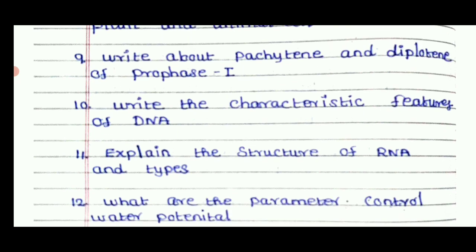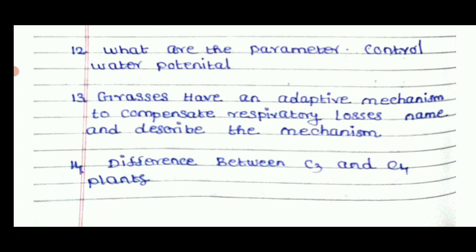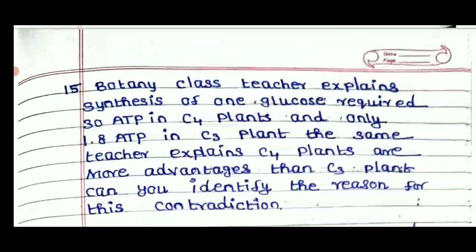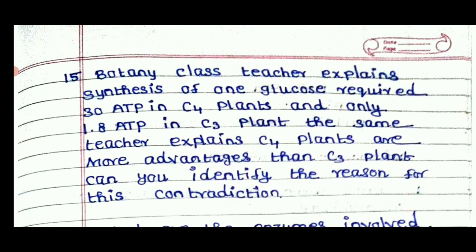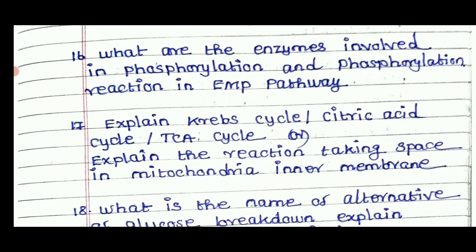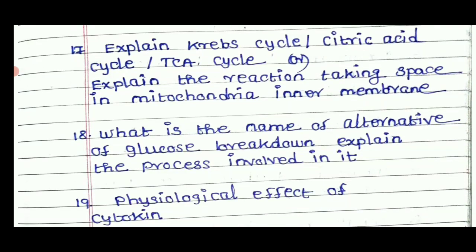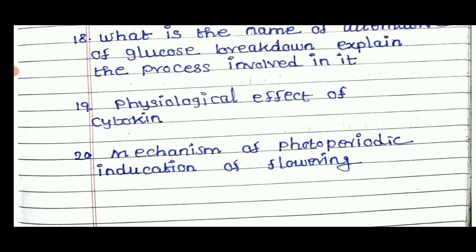Write the characteristic features of DNA. Explain the structure of RNA and its types. What are the parameters that control water potential? Grasses have an adaptive mechanism to overcome respiratory losses — name and describe the mechanism. Difference between C3 and C4 plants. The botany class teacher explained the synthesis of one glucose requiring 38 ATP in C3 plants and only 30 ATP in C4 plants — C4 plants are more adaptive than C3 plants. Physiological effects of cytokinin. Mechanism of photoperiodic induction in flowering.